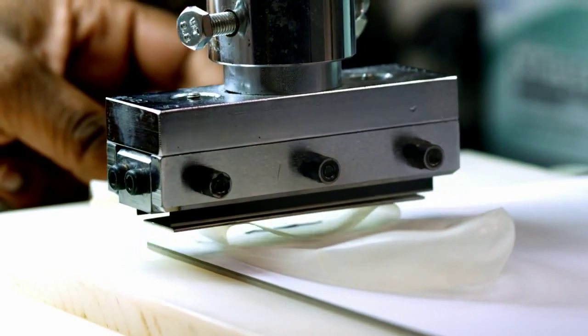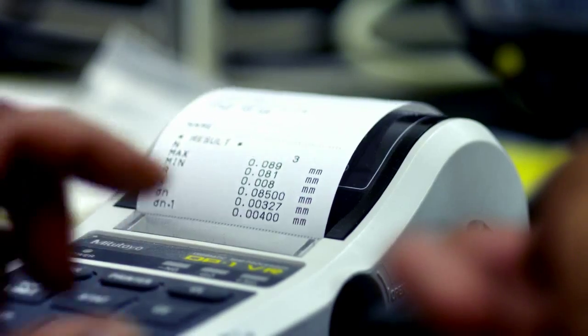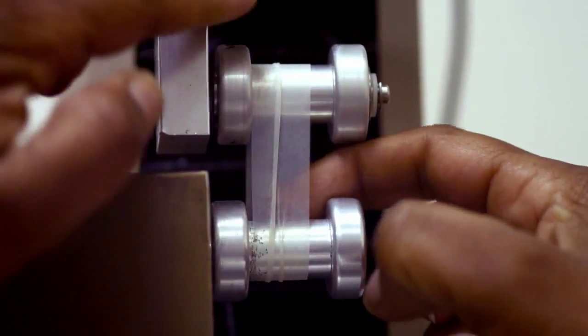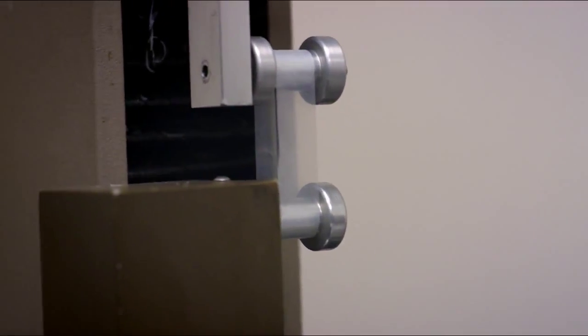This next test here, which we call the tensile test, stretches out the width of the condom to see how far it can enlarge and how strong it is. Most condoms stretch to over 750% of their original width.